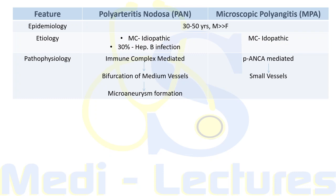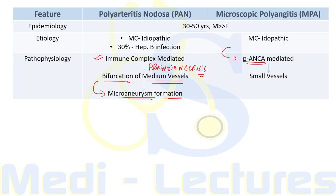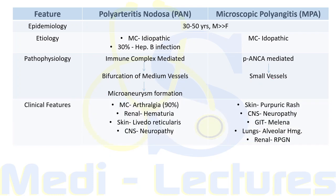The most common etiology is idiopathic for both conditions, but 30 percent of PAN cases are associated with hepatitis B infection. In the pathophysiology of PAN, it is immune complex mediated — immune complex deposition leads to fibrinoid necrosis, typically at the bifurcation of medium vessels, leading to microaneurysm formation with necrotizing vasculitis. MPA is ANCA-mediated and typically affects small vessels.